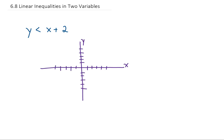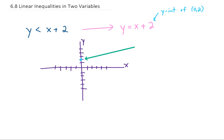To graph this inequality we first need to graph the equation. Mentally put an equal sign in there instead of an inequality sign and graph that equation. We know that this line has a y-intercept of (0, 2), which is this point down here on the graph. The slope of this line is 1, which is a rise over run of 1 over 1. I'm going to fill that line in with a dotted line for now.